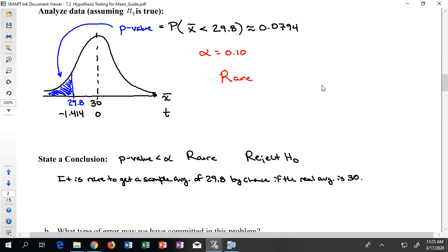The second sentence is always, so then what do you believe? If we think it's rare and we were rejecting H0, that means we're kind of picking H1. So we'll say we have enough evidence to believe that the average miles per gallon for this car is under 30 miles per gallon.